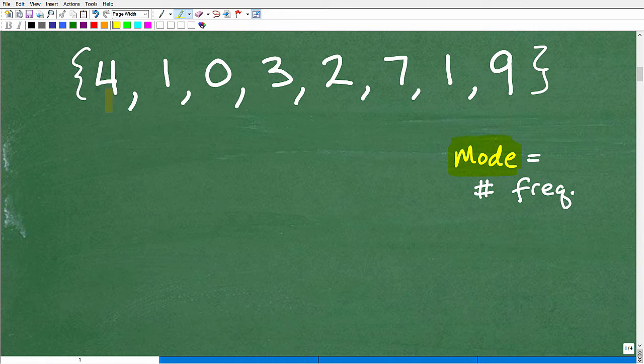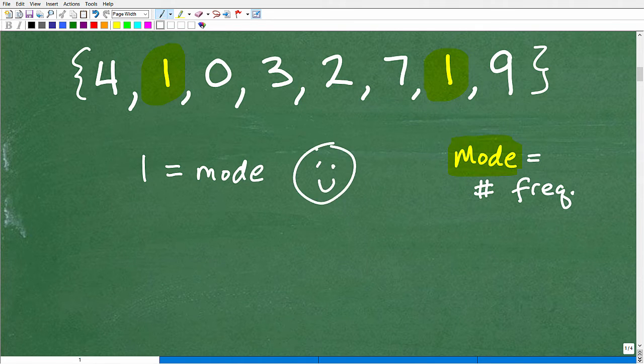We have four. Okay, four just shows up one time. We have a one. I'm looking for other ones. Oh, here's one. One showed up twice. Yes, I'm looking at zero, zero is just one time, three, two, seven, nine. All these numbers just showed up once individually, but I have one that showed up two times, so one is the mode. It's super easy, and we like when math is easy.